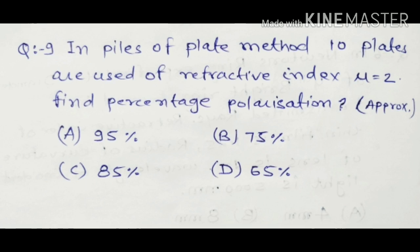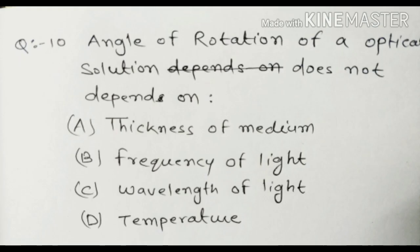Question nine: in the piles of plate method, 10 plates are used with a given refractive index mu. Find the percentage of polarization. You can approximate your answer if you have calculation difficulties. Please share your answer in the comment box.